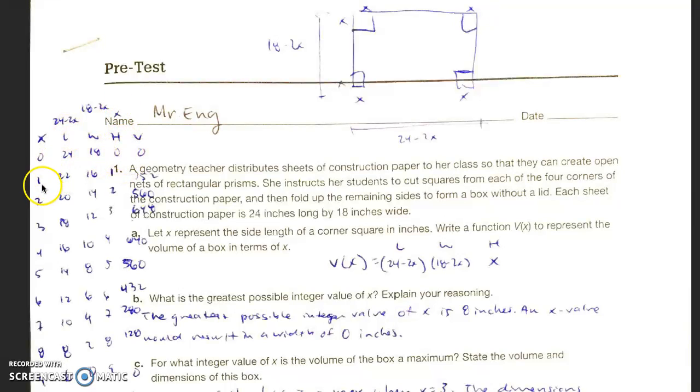For example, to make my chart, I put in x equals 1. If this represents 1 and this represents 1, then basically I'm subtracting 2. So 18 minus 2 times 1 is 18 minus 2 which gives you 16. And then this one will be 24 minus 2 times 1 is 2. So 24 minus 2 gives you 22. And then the height is equal to x. So that's 1. You multiply across, you'll get 352.